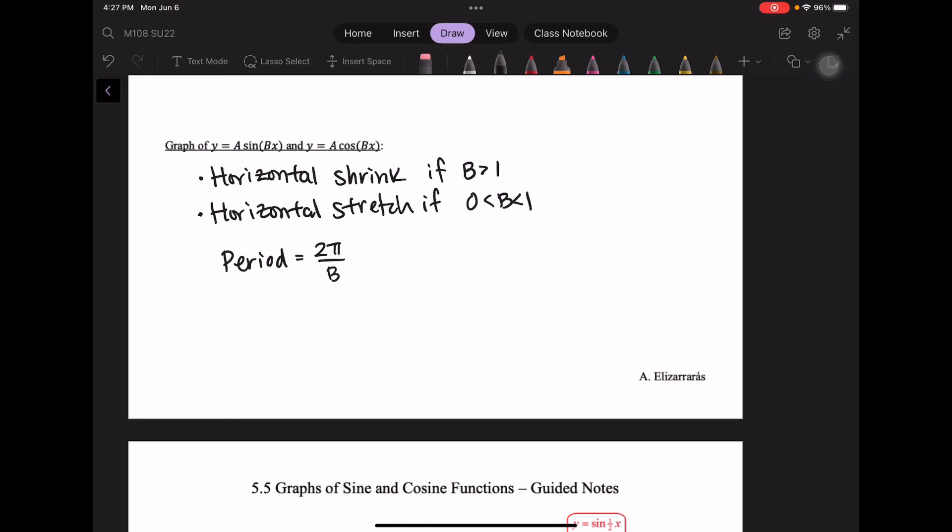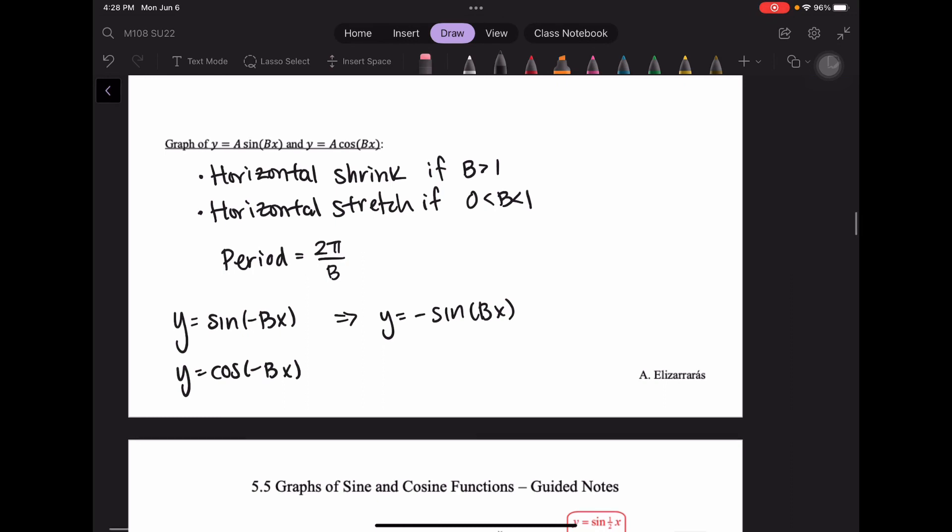Now remember that sine is odd and cosine is even. So let's look at what happens when you input a negative. With sine of negative bx, that's going to give us the function negative sine of bx. And with cosine, it's just going to be the same thing.